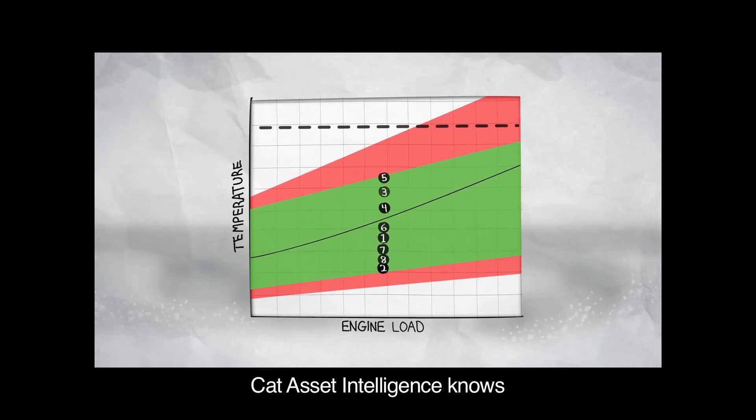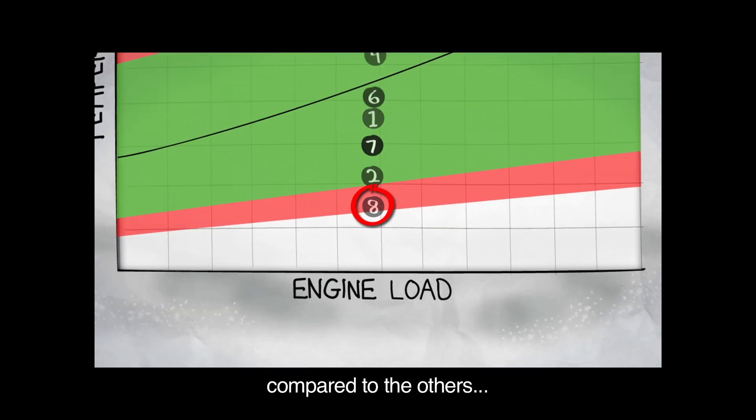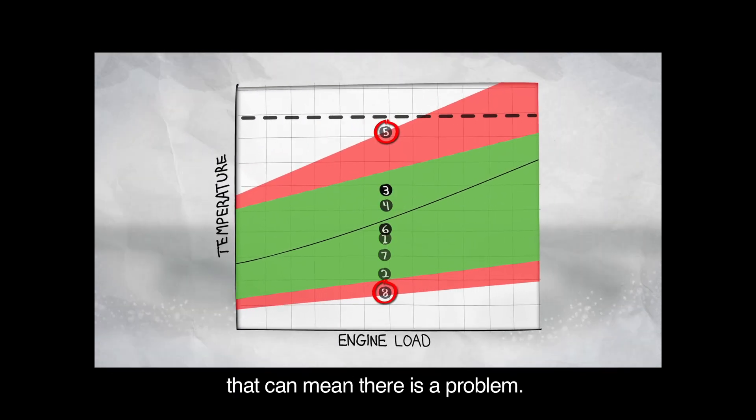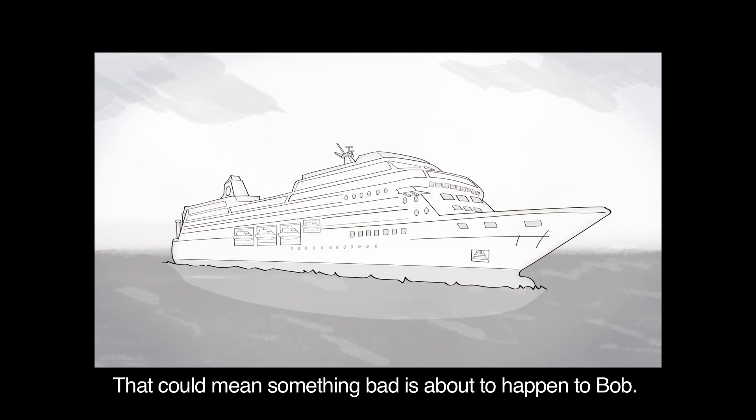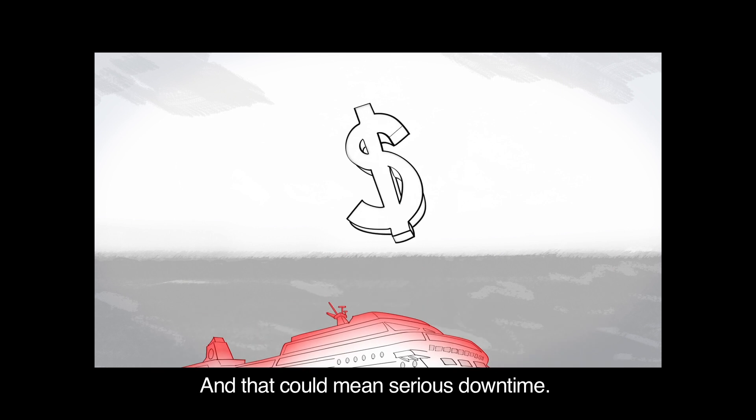CAT Asset Intelligence knows if just one cylinder is running too hot or too cold compared to the others, that can mean there is a problem. That could mean something bad is about to happen to Bob. And that could mean serious downtime.